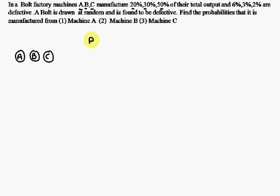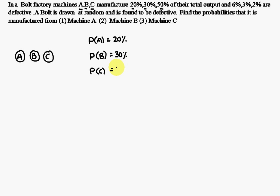The data given is: the probability of machine A is 20 percent, the probability of machine B is 30 percent, the probability of machine C is 50 percent. And 6 percent, 3 percent, and 2 percent of bolts are defective, so each machine is producing some bolts out of which some are defective.